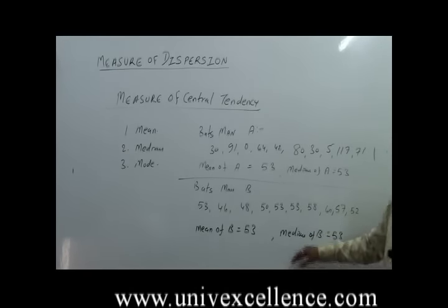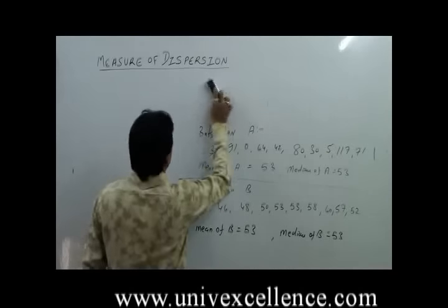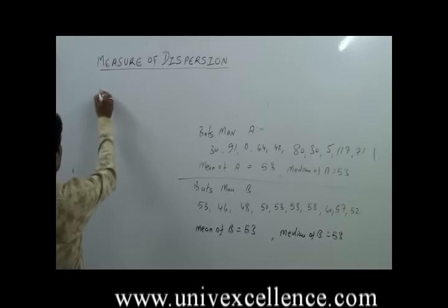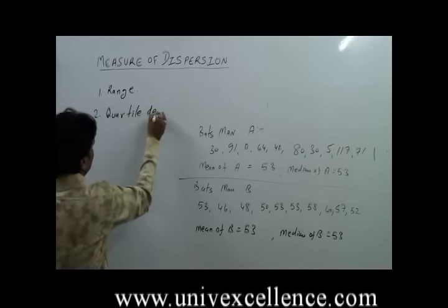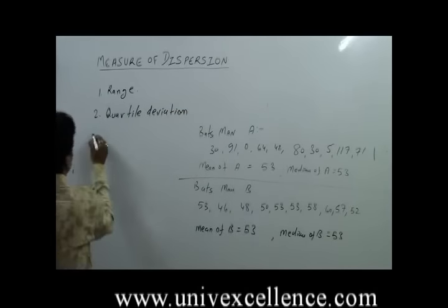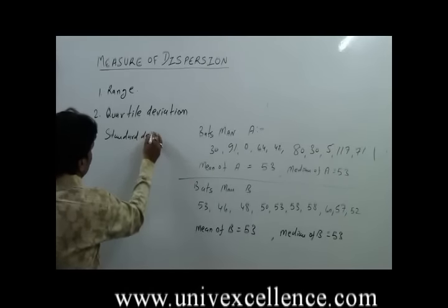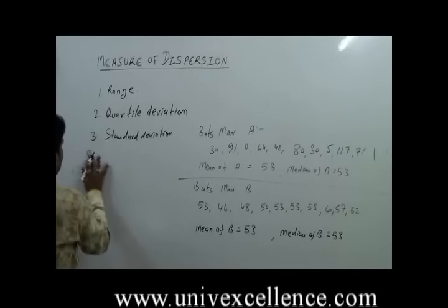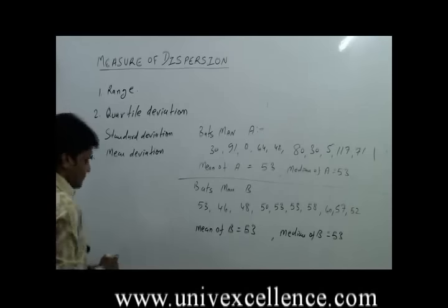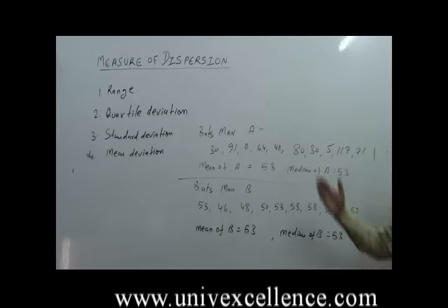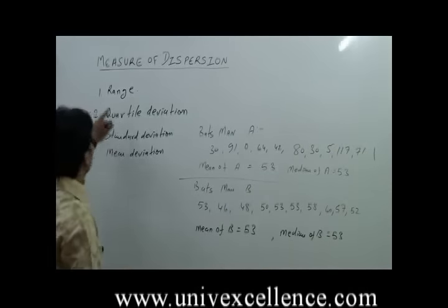So how can we find out whether the data or information is consistent or not? We use, for this purpose, the Measure of Dispersion. There are four components of finding out the Measure of Dispersion: one is Range, second is Quartile Deviation, third is Standard Deviation, and fourth is Mean Deviation.